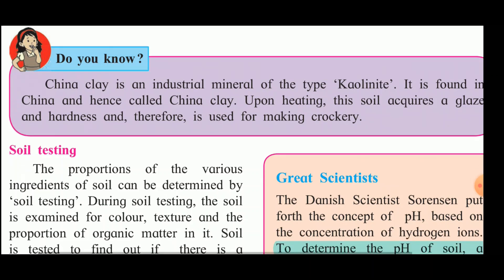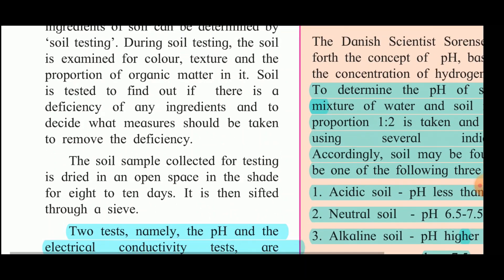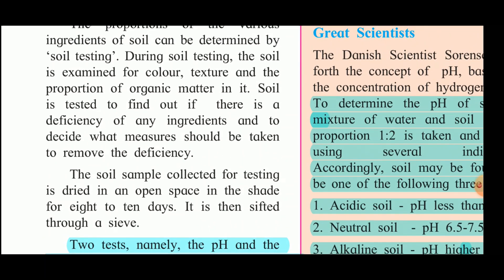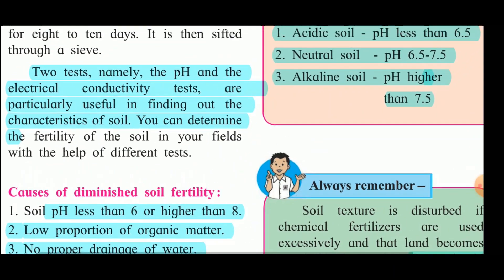Soil testing is done to determine the proportion of various ingredients in the soil. During soil testing, the soil is examined for color, texture, and proportion of organic matter. It helps find deficiencies in any ingredient and decide measures to remove them, which is useful in agriculture. Soil samples collected for testing are dried in the shade for eight to ten days and then sifted through sieves. Tests for pH and electrical conductivity are particularly useful in finding the characteristics of soil.